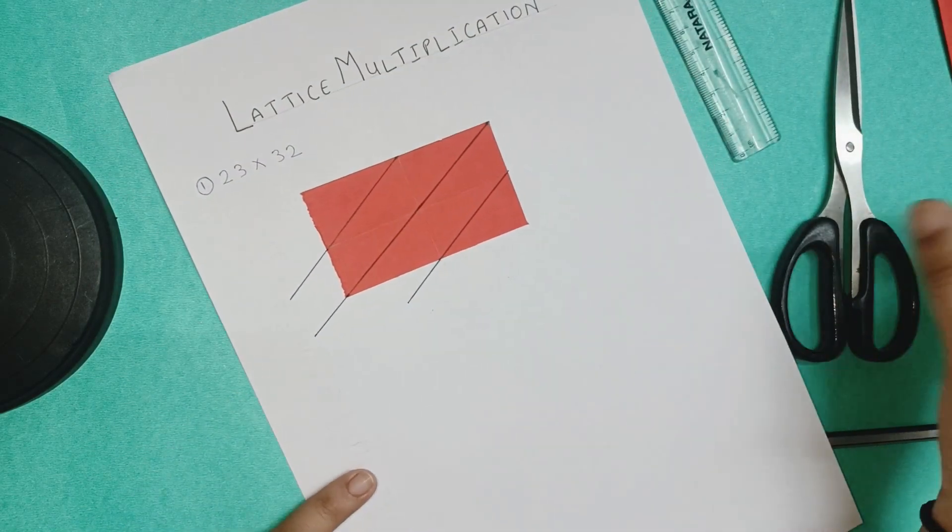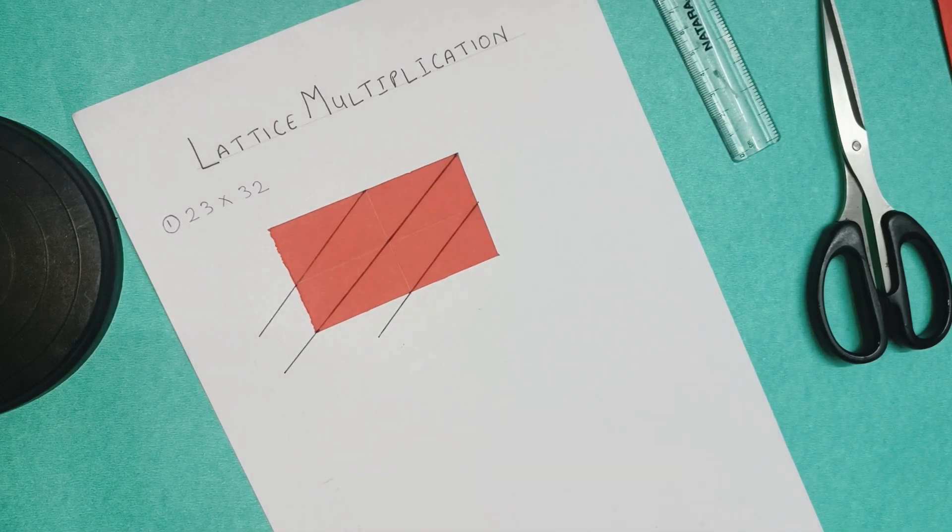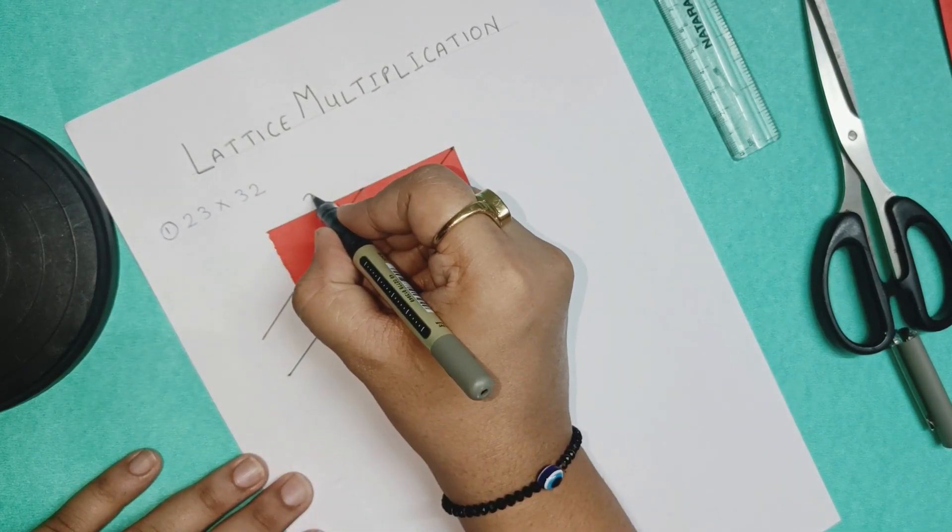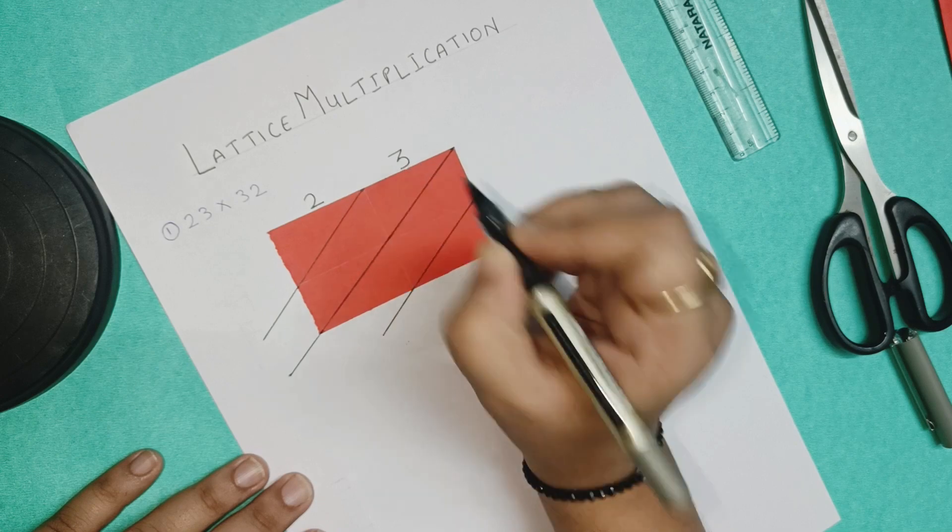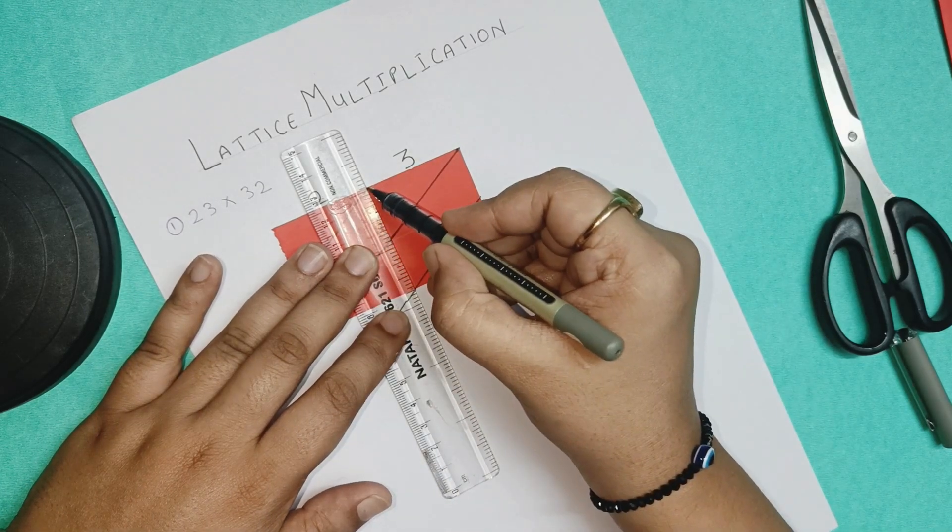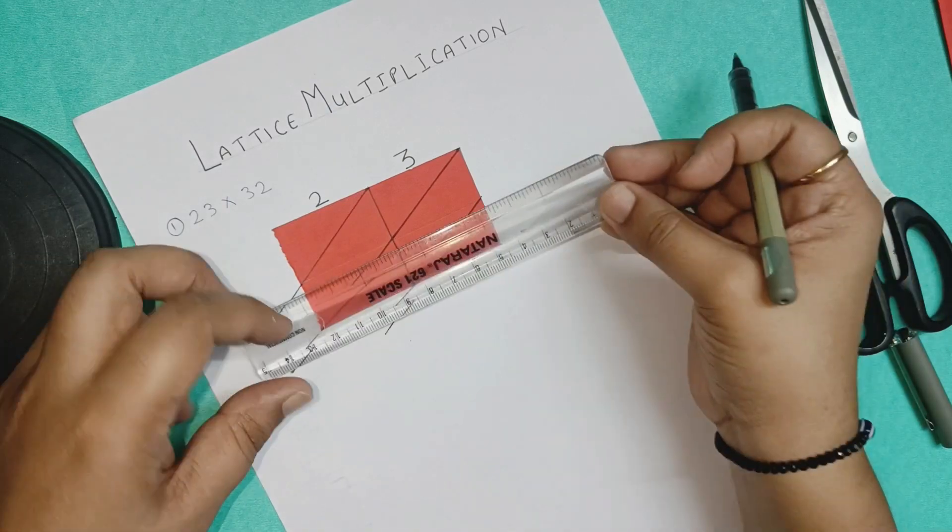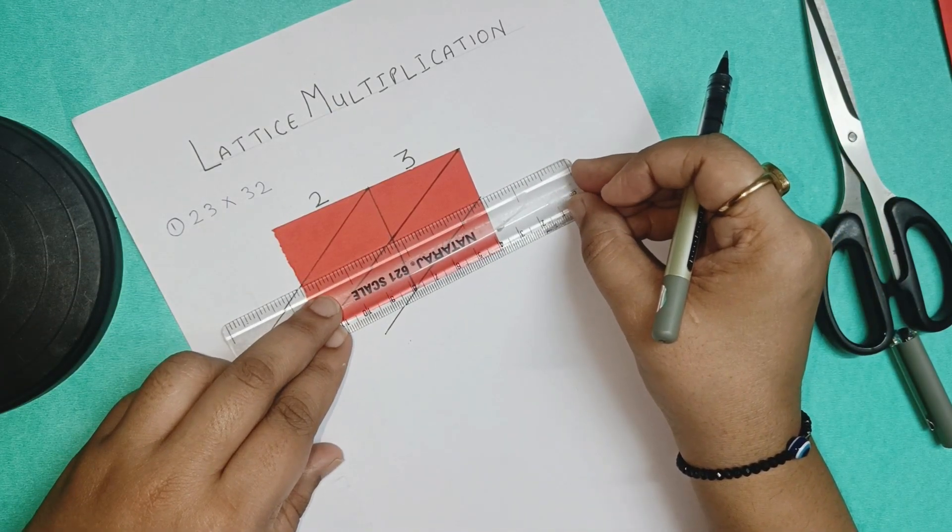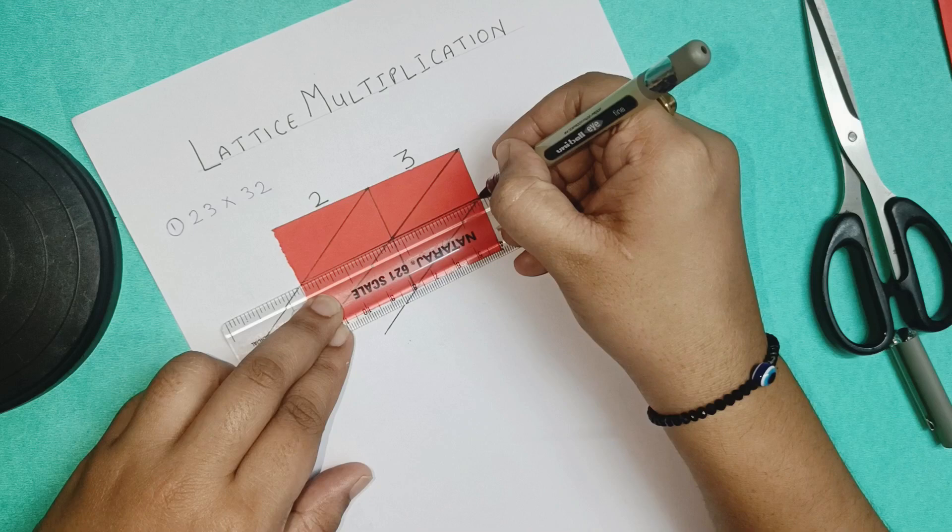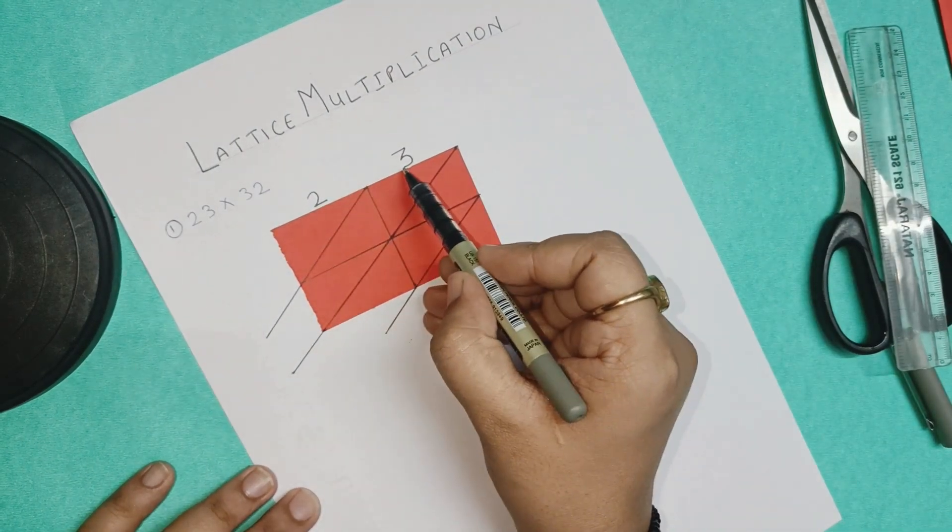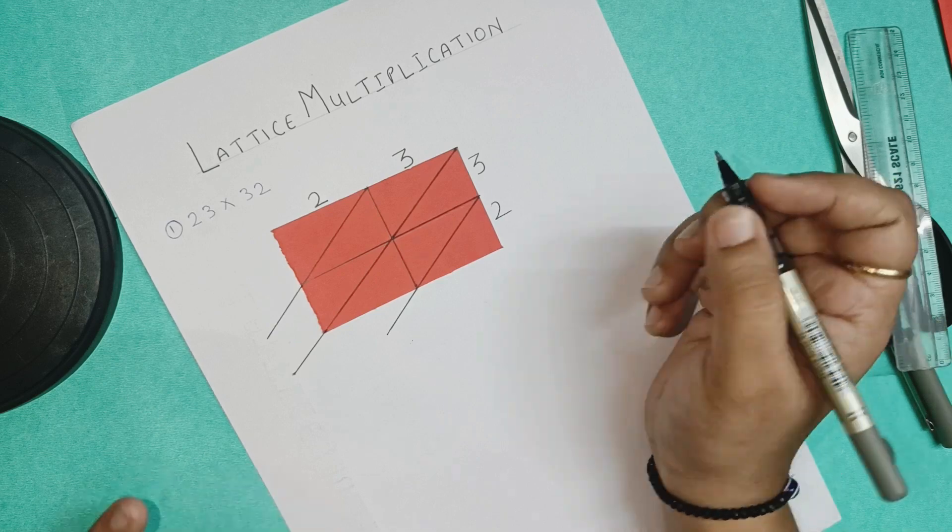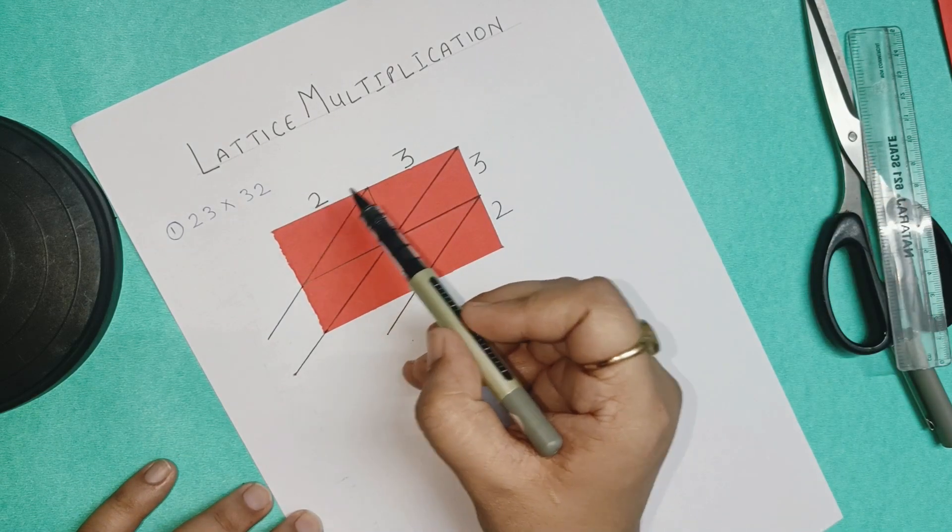Now we are going to start with the multiplication. For this we have to write 23 and 32 in a particular manner. 23 we will write on the top, over here, on each box. We were having two boxes over there. We have to write 23 over there. Let us draw these lines also using the pen so that these lines are visible to you.